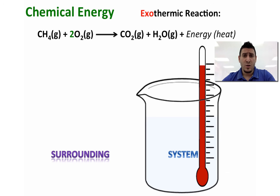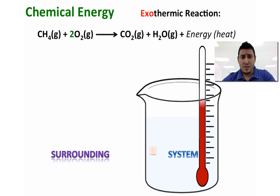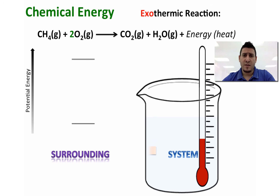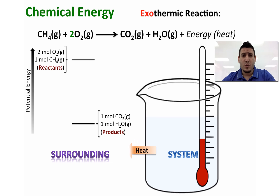Let's discuss the combustion of methane, which is an exothermic reaction and therefore produces heat. As you can see, energy or heat is part of the product. The system is losing energy — energy is being transferred from the system to the surroundings. If we look at the energy diagram of the reactants and the products, we can see that the potential energy of the reactants is higher than the potential energy of the products. The potential energy is stored in the bonds.